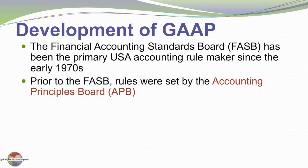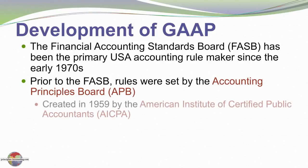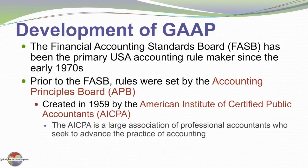Prior to the FASB's existence, the rules were set by the Accounting Principles Board. They issued a number of opinions that constituted the rules base, some of which are still in existence today. The Accounting Principles Board was created in the late 1950s by the American Institute of CPAs. The AICPA is essentially a large association of professional accountants who seek to advance the practice of accounting.